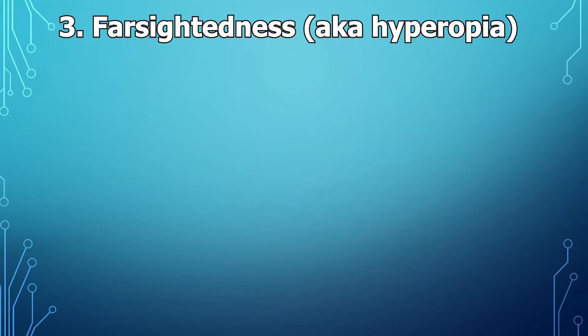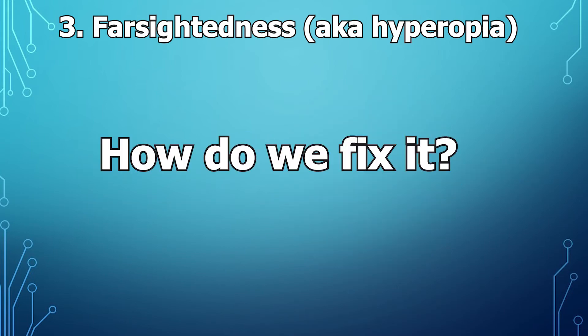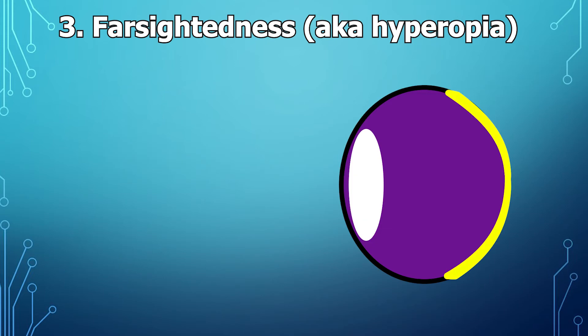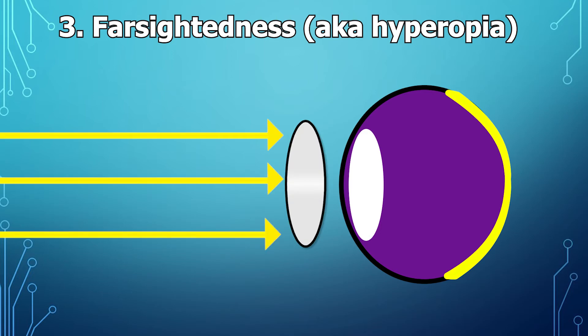So what do we do about it? Well, considering it's the opposite of nearsightedness, could you guess? Just kidding, I'll just tell you. You're going to use converging lenses. So if you have light coming in as usual, it's going to hit these glasses or contacts and it's going to converge the light rays so when it hits the lens again, it can focus right on the back of the retina and you get a nice clear image.